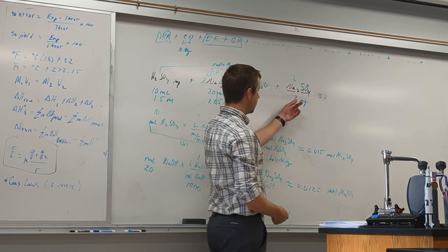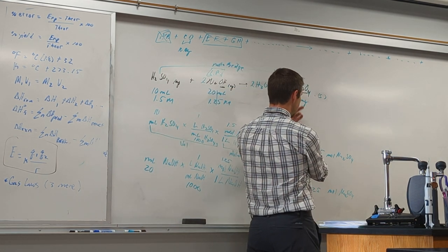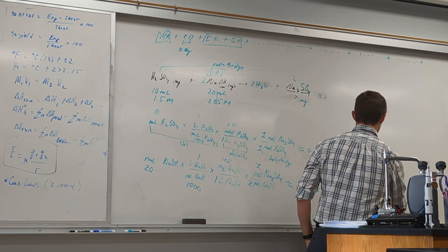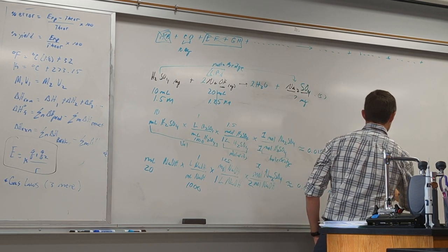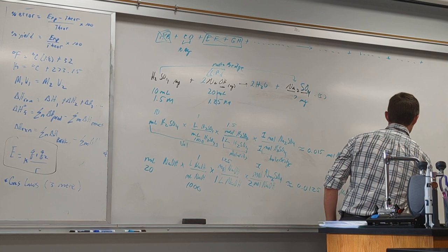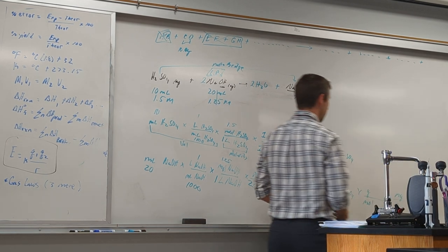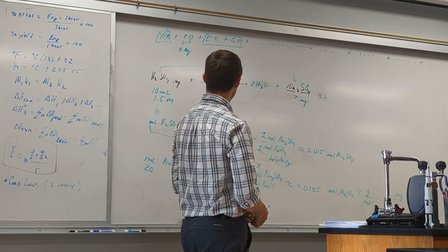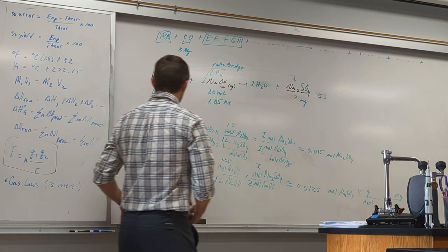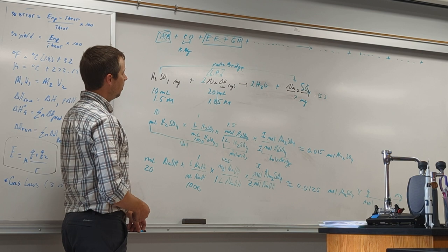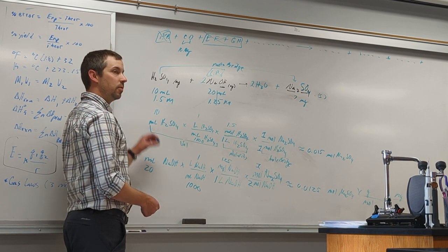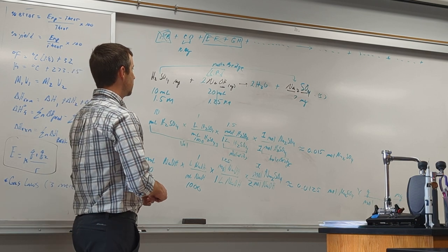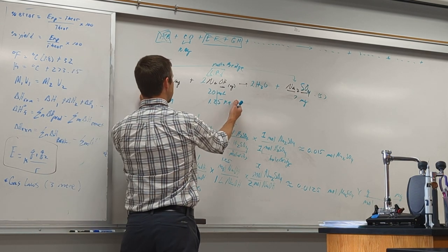Now if we wanted the mass amount, we don't do anything to the limiting reactant result — we use it. Get from moles to grams using the molar mass, then grams to milligrams with a unit conversion. Figure out the molar mass, the formula mass, and do the unit conversion. How could we have quickly — without all this math — figured out the limiting reactant given this information?